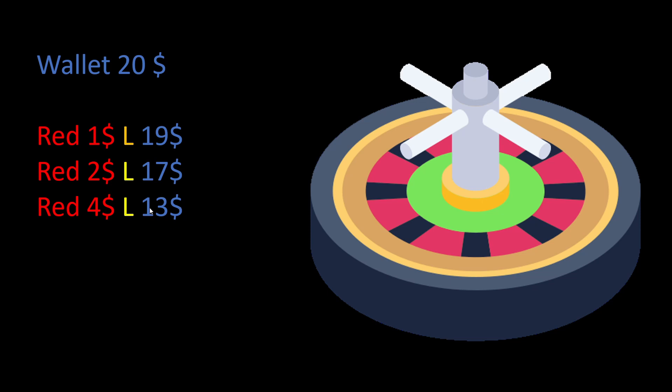We double again to $4, leaving $13, and so on. Eventually we hit a win, and the amount we win covers all the previous losses and adds a small profit — ending up with $21 in this example. This approach of doubling the bet every time we have a losing trade is called the Martingale approach.